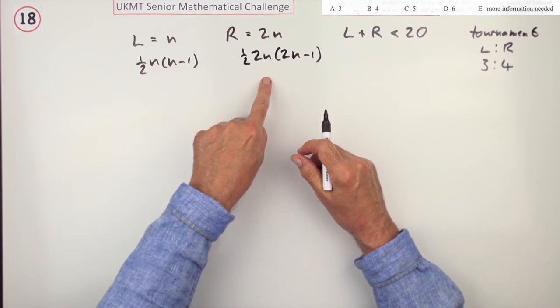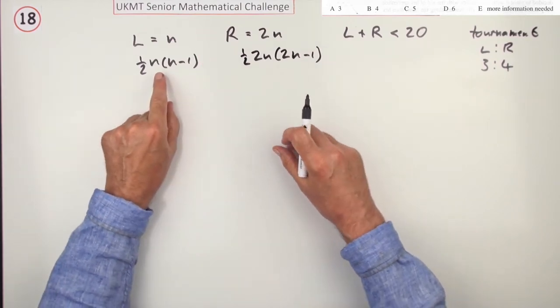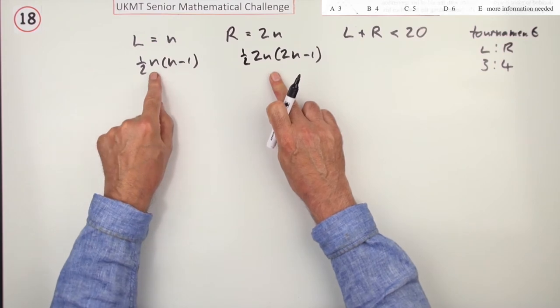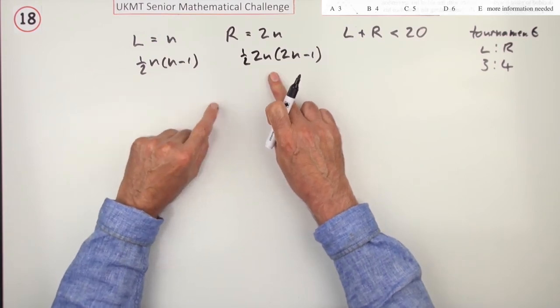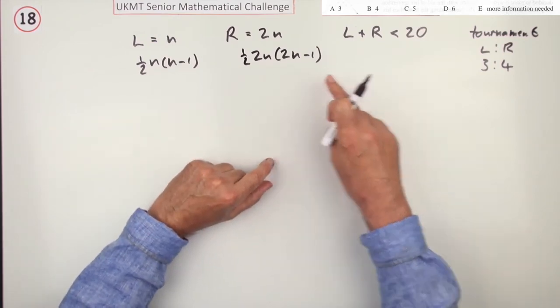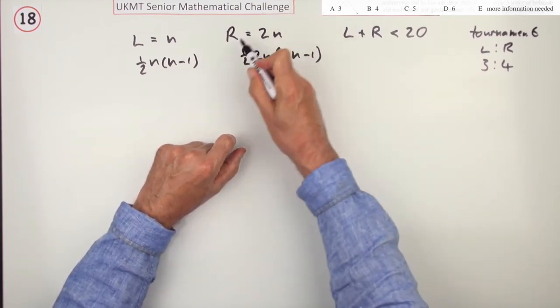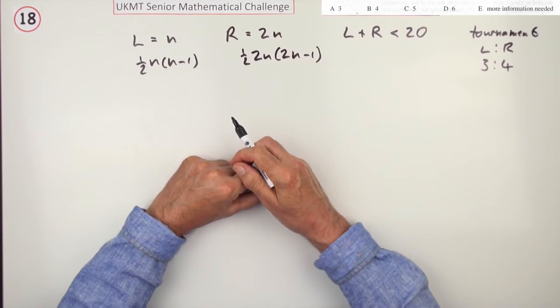This would say here that you would expect approximately the ratio of left-handed wins to right-handed wins to be 1 to 4, not 3 to 4. Simply by virtue, the fact is there's far more games involving right-handed players.